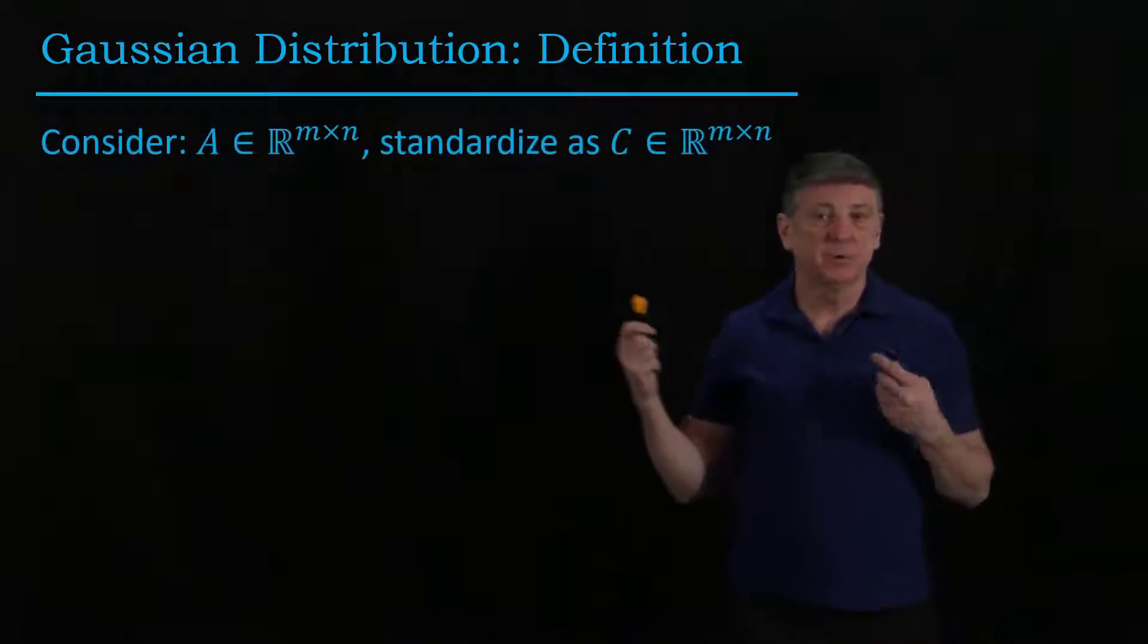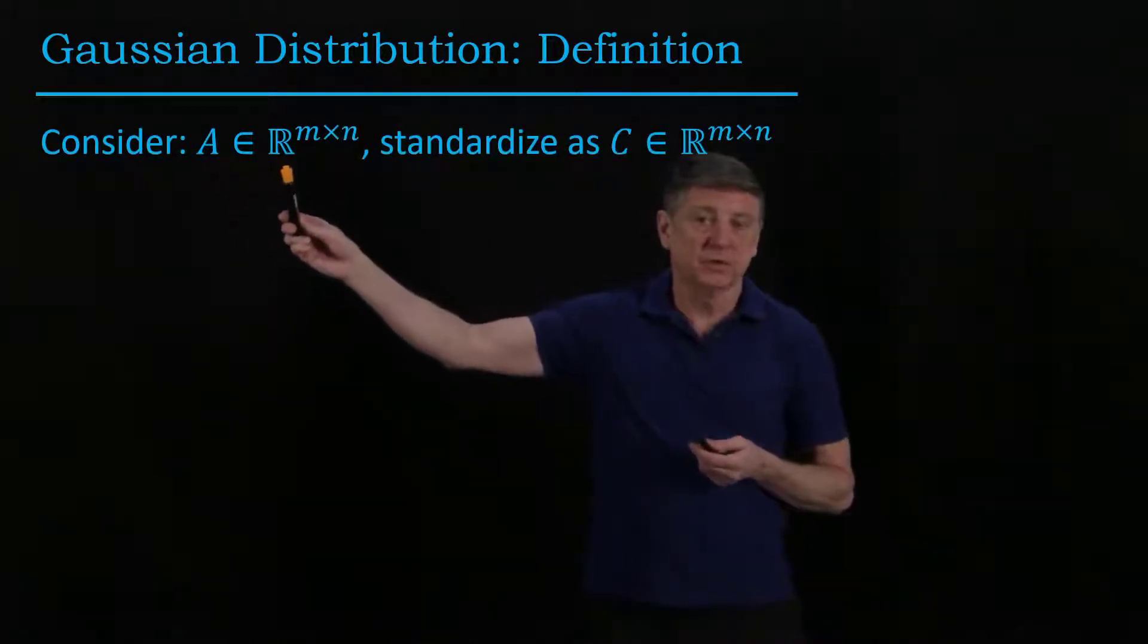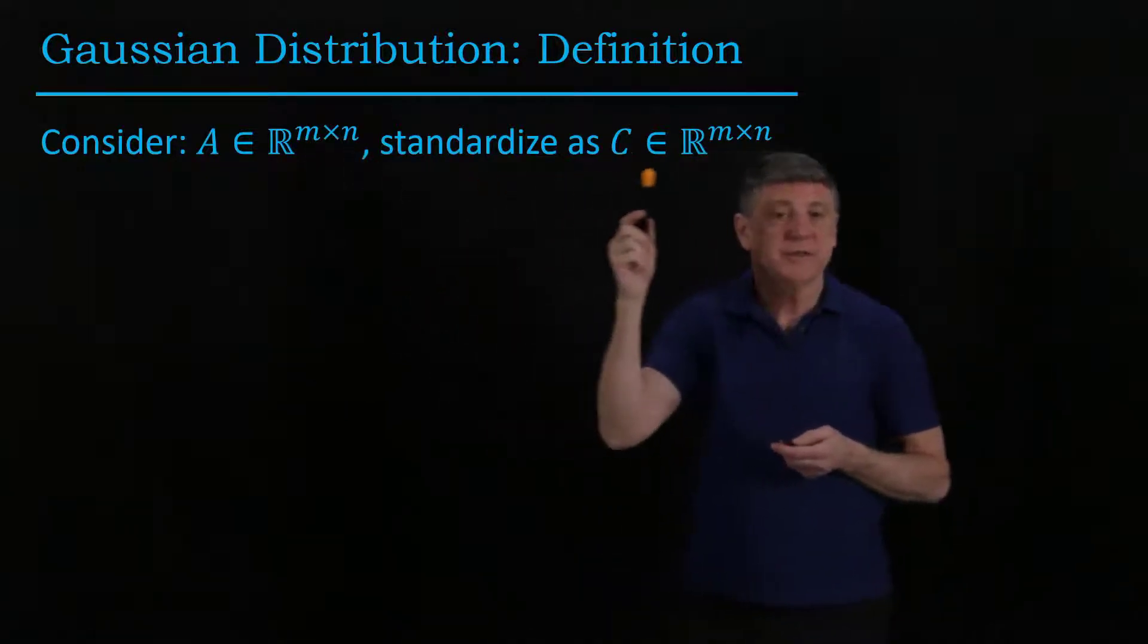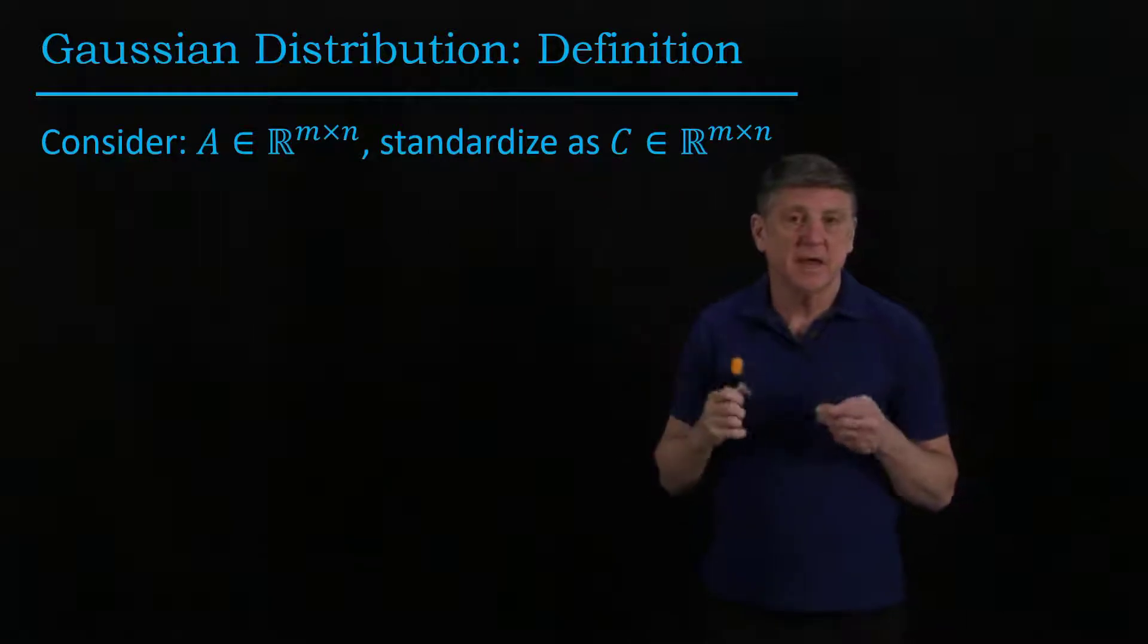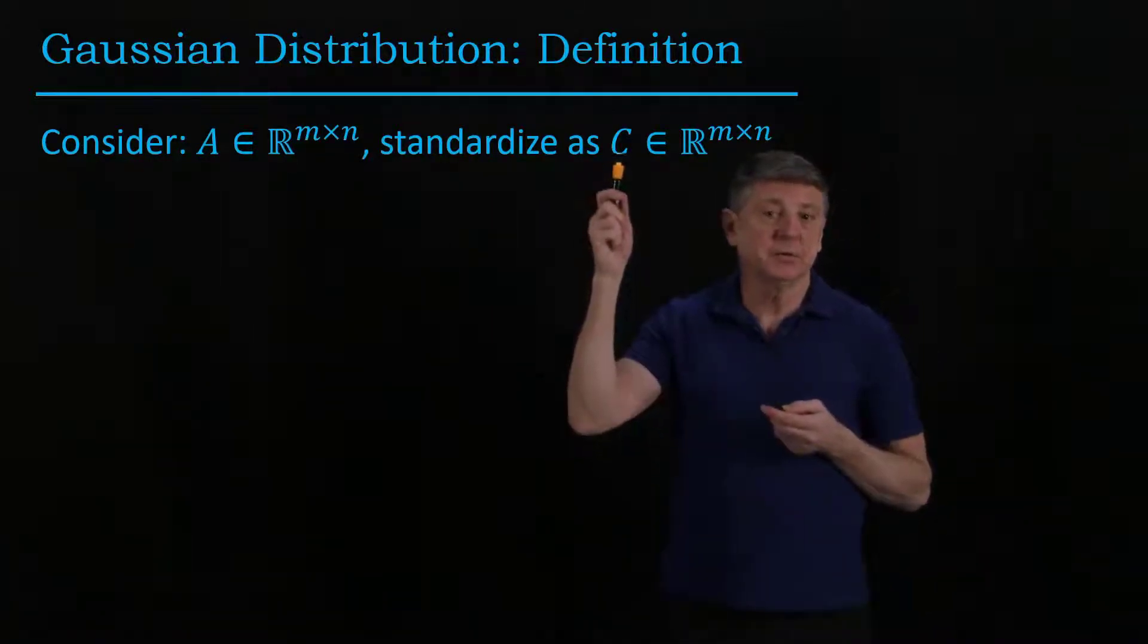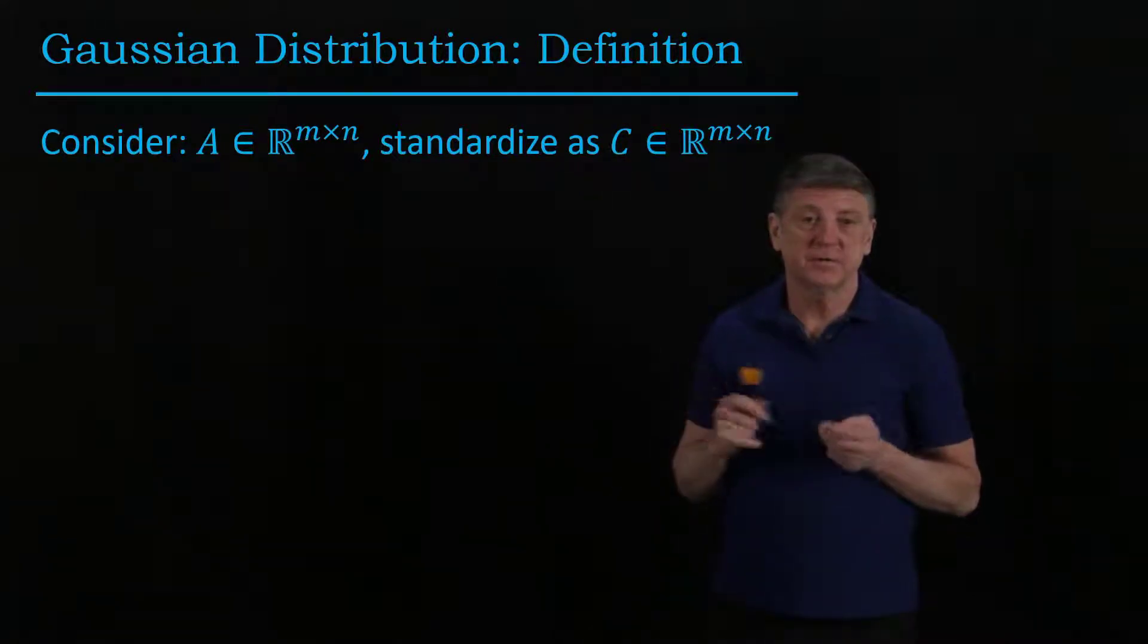What we mean by that is suppose our data come in as a matrix A, and these are all real numbers. There are m observations and n variables. What we'll do is standardize this as a matrix C, and that standardization is the usual one, so C is now a zero mean matrix and each column has a unit standard deviation.